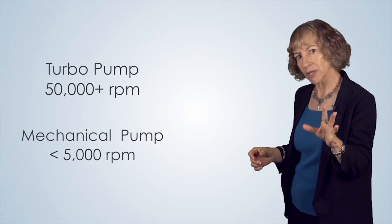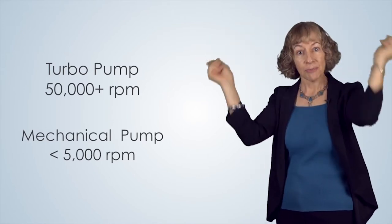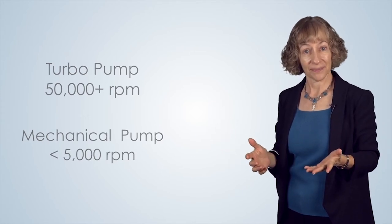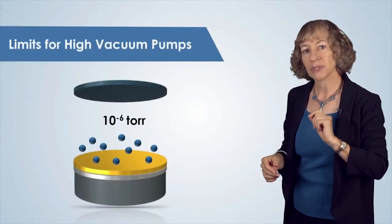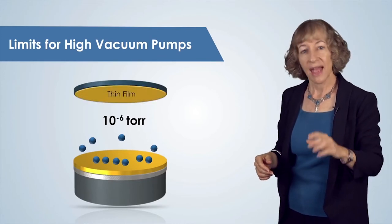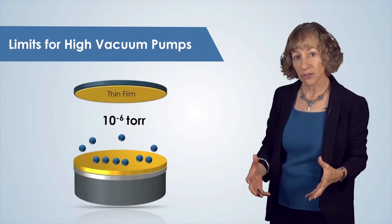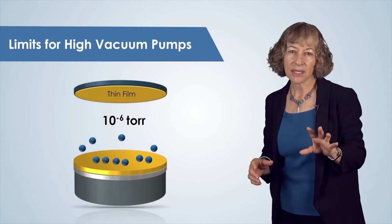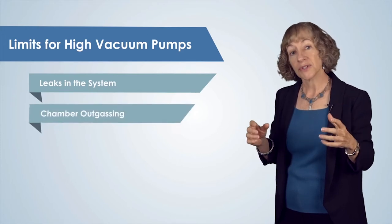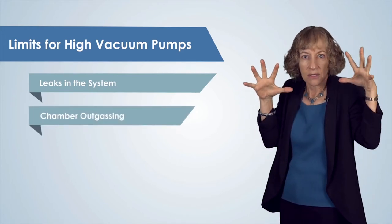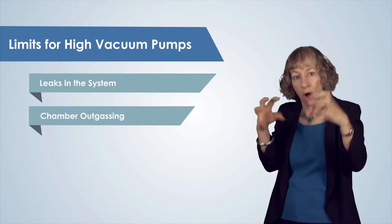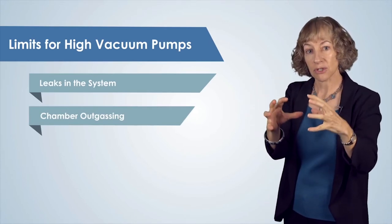Now this is still pretty fast — a helicopter rotor typically spins at only 400 to 500 rpm. High vacuum pumps can achieve 10 to the minus 6 torr for depositions, and they can achieve even lower pressures than that. But they're typically limited by small leaks in the system or in gaskets, or if the system outgasses, which means there are air molecules of trapped gas in the system that tend to come off the chamber walls as the pressure decreases.